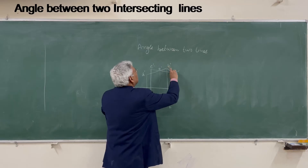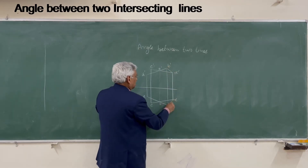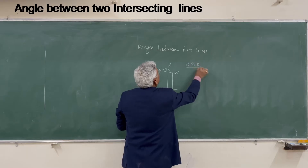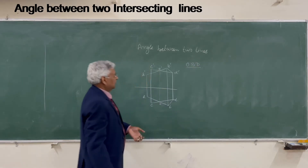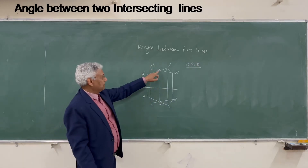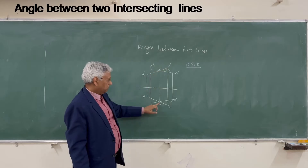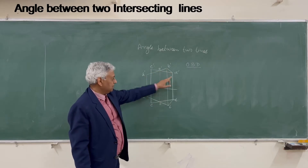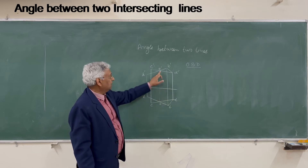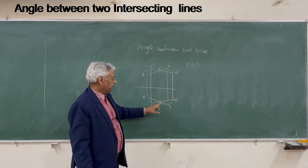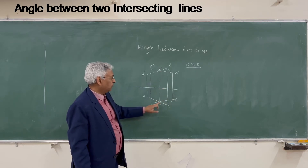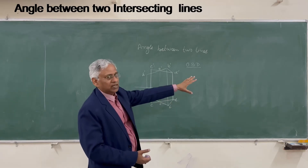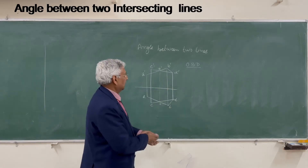Consider triangle O, B and D. You know the elevation of OB, the plan of OB, the elevation of BD, the plan of BD, and the elevation and plan of OD. You can determine the true length of each of these sides.